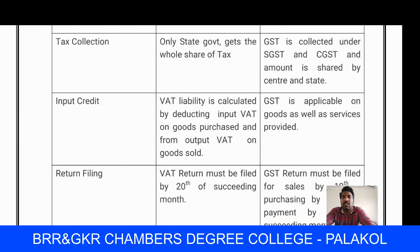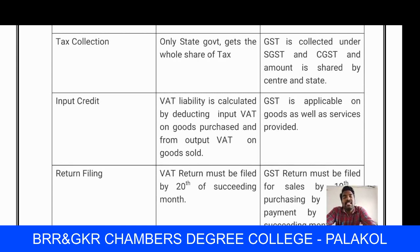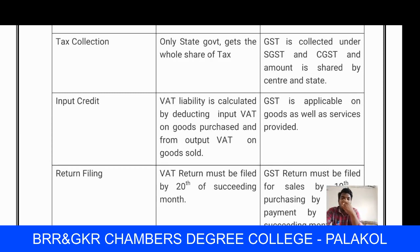Next, tax collection. Under VAT, only the state government collects the whole share of tax — nothing goes to the central government. But in GST, tax is collected under SGST (State Goods and Service Tax) and CGST (Central Goods and Service Tax). The SGST amount goes to the state government and the CGST amount goes to the central government, shared equally between state and central.